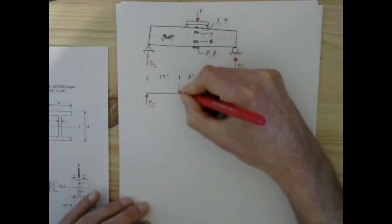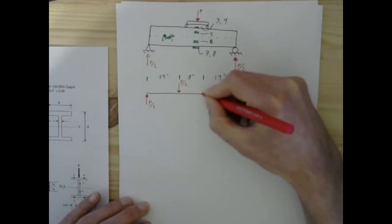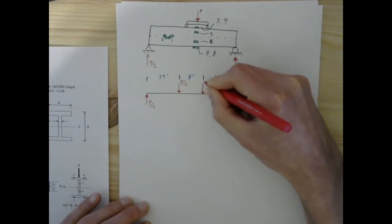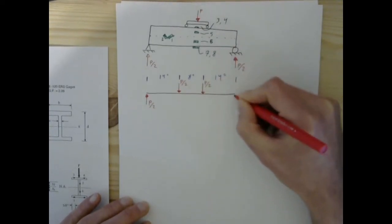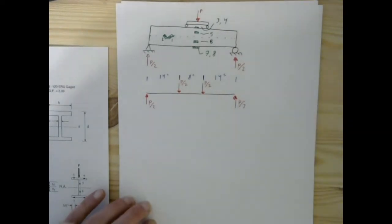So we'll have P over 2 right there and right here. And then the roller over here will also be applying one half of P.